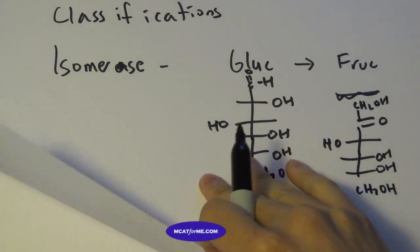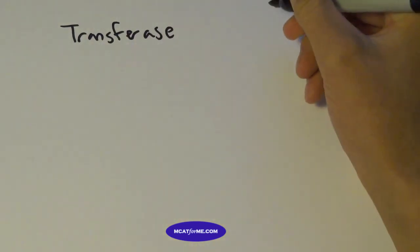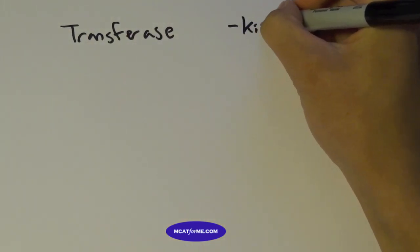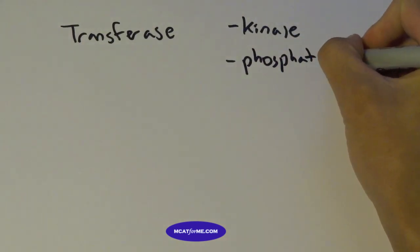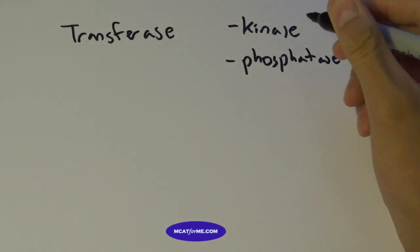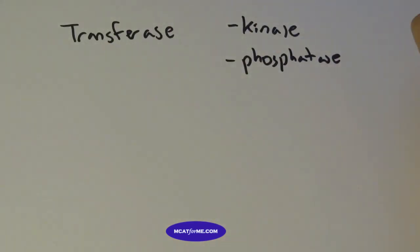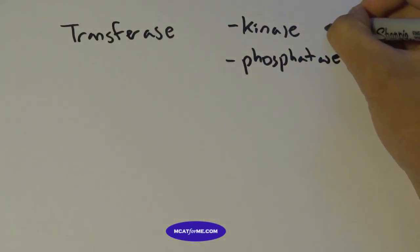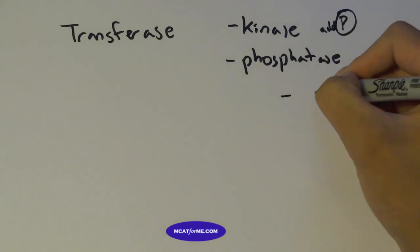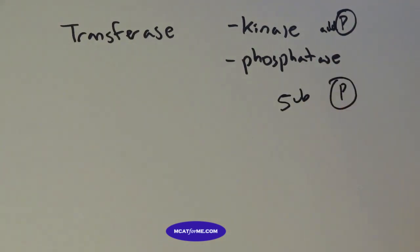The next one we're going to be talking about is something called a transferase. And so an example of a transferase would be something like a kinase and a phosphatase. Those are the two that you'll need to know for the MCAT. And so a transferase transfers a group from one thing to another. So for example, kinase transfers a phosphate. So it adds a phosphate group.